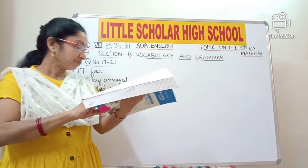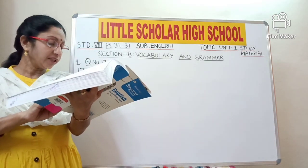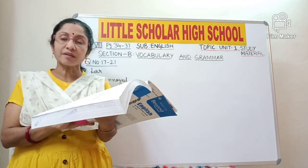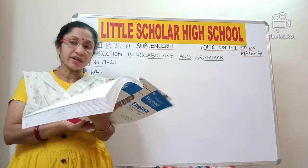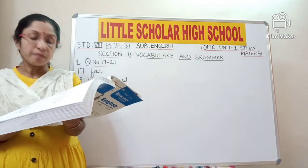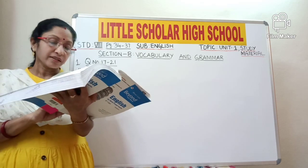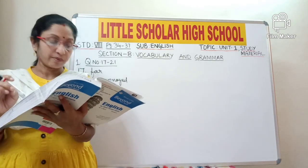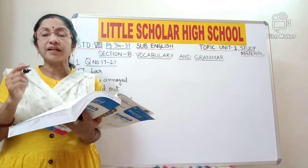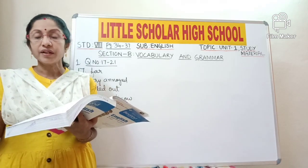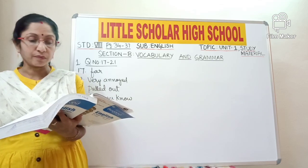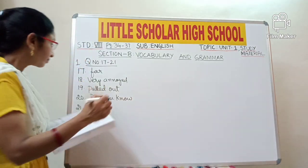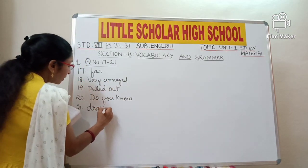Question number 21: 'He drawn a salary of 2500 rupees.' The sentence uses 'has' which represents present tense. 'Drawn' is the third form of the verb — past participle. Draw, drew, drawn: draw is present, drew is past, drawn is past participle. So here the verb form should be present tense 'draws'. The word 'drawn' will be replaced with 'draws'.